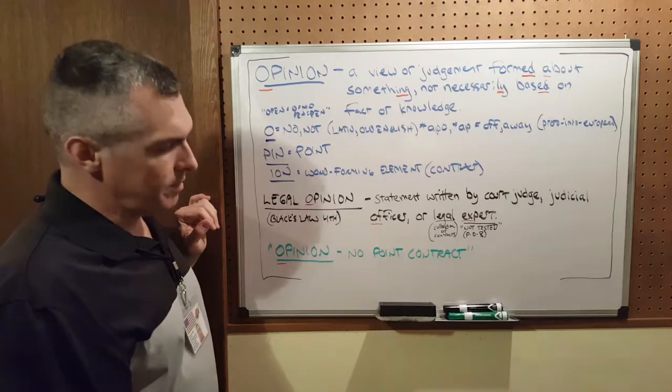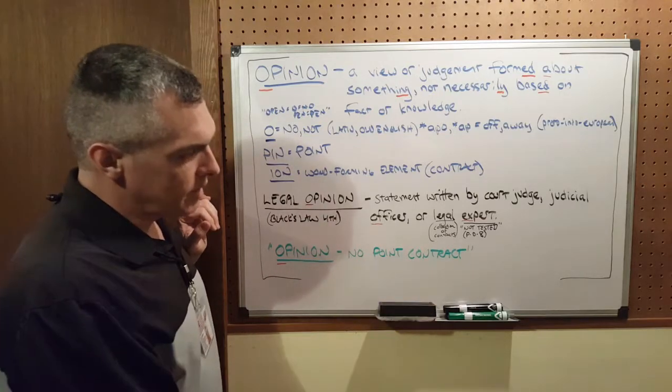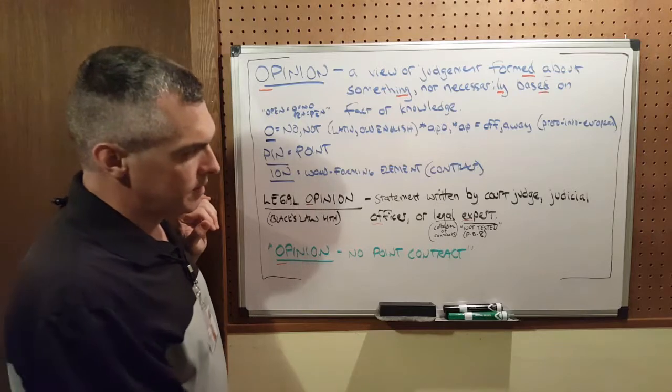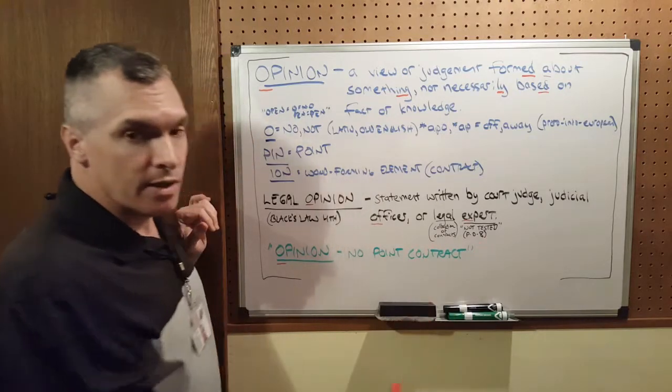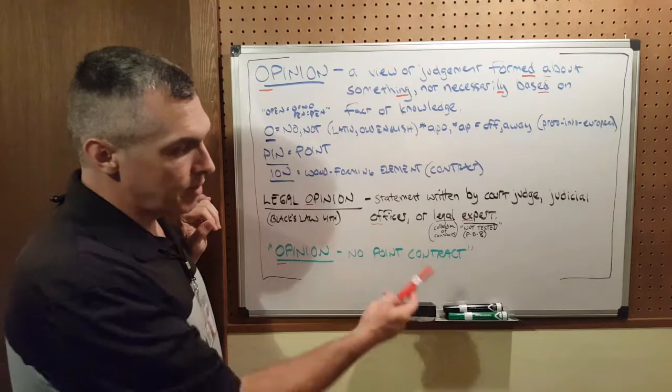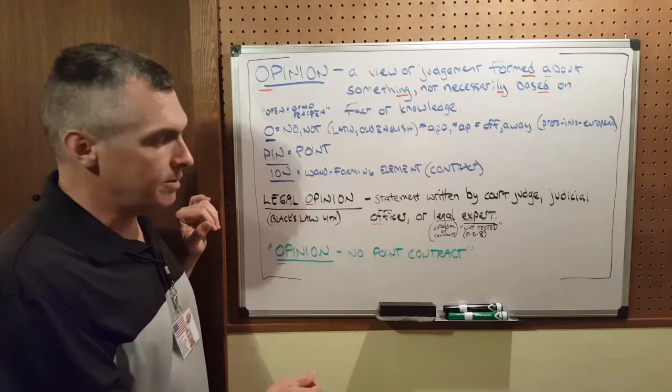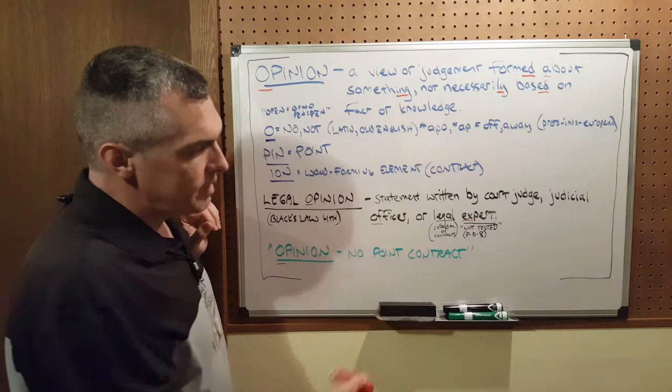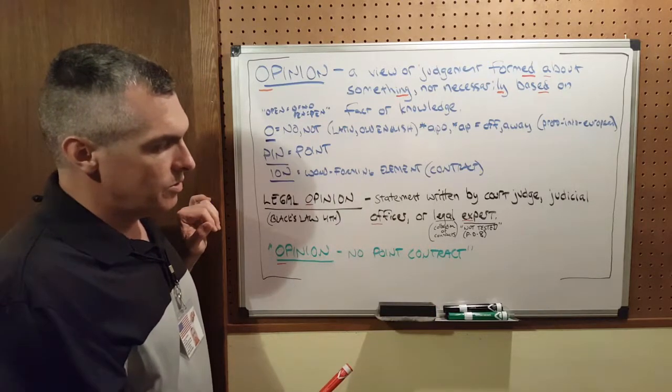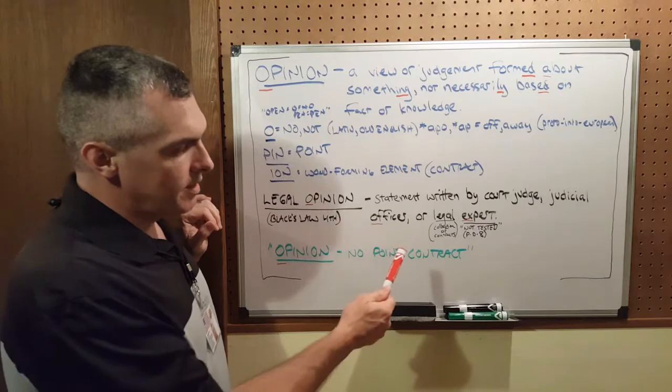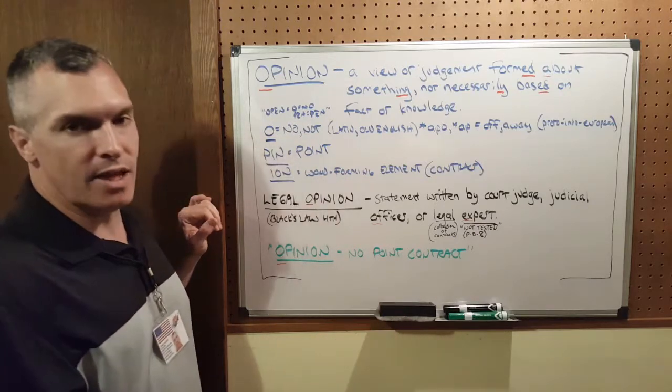What is a legal expert? Legal is basically a collection of contracts. An expert, which I parsed in Parse Data 8, I'll leave a link to that, means not tested. So, it's written by a collection of contracts that are not tested.